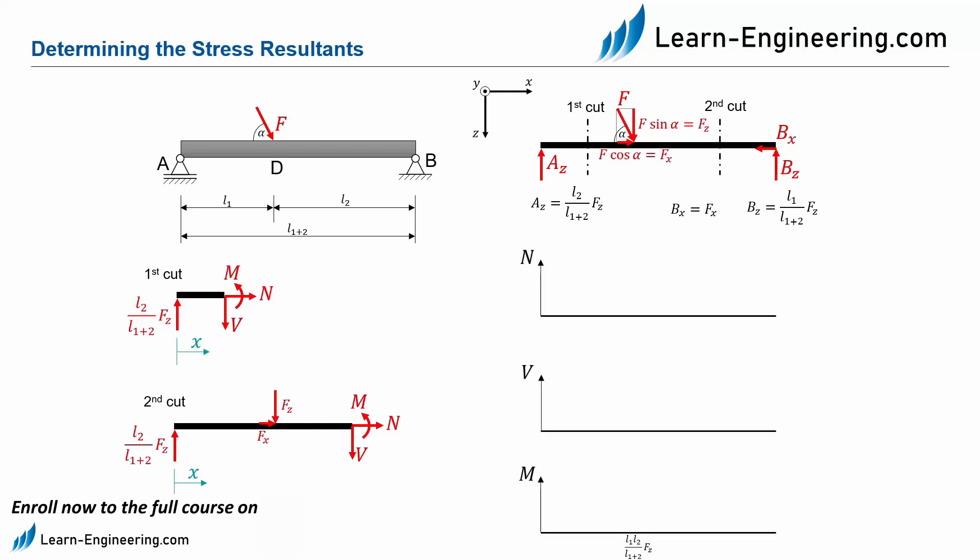These diagrams are called normal force, shear force, and bending moment diagrams. To determine the curves we form an equilibrium condition for each component and calculate the forces. In addition, we divide the diagrams at point D where the force acts into two areas in order to separate the first section and the second section.